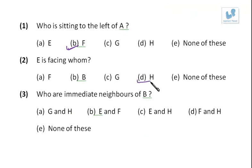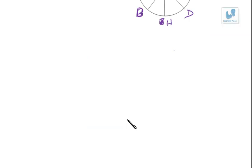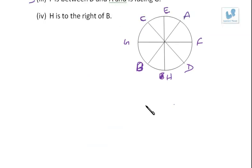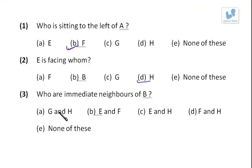Who are the immediate neighbors of B? Just see, neighbors of B - these are H and G. So G and H.